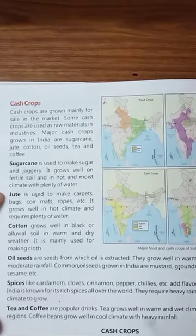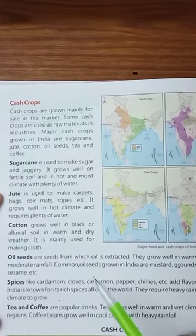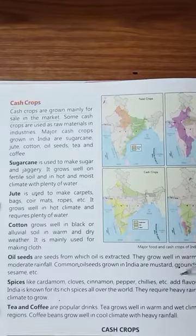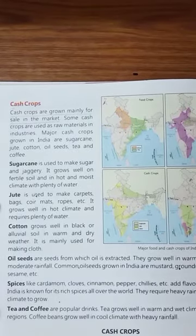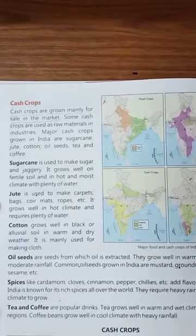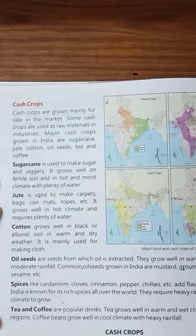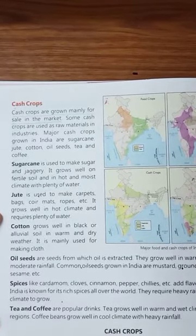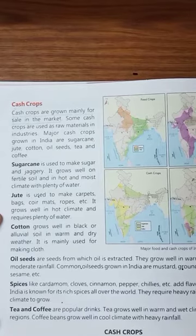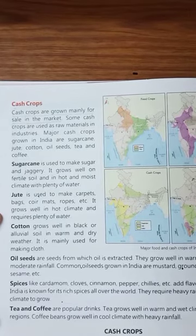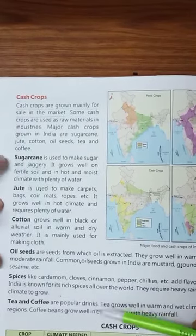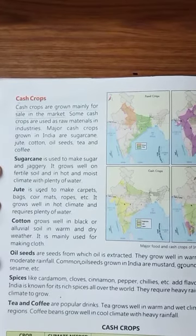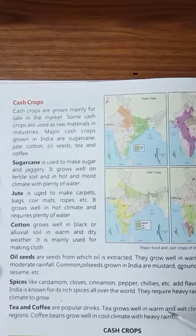Cash crops — these are grown mainly for sale in the market. These crops are grown for earning money by selling them. That is why they are called cash crops. Major cash crops are cotton, oilseeds, sugarcane, jute, spices, tea and coffee, etc.